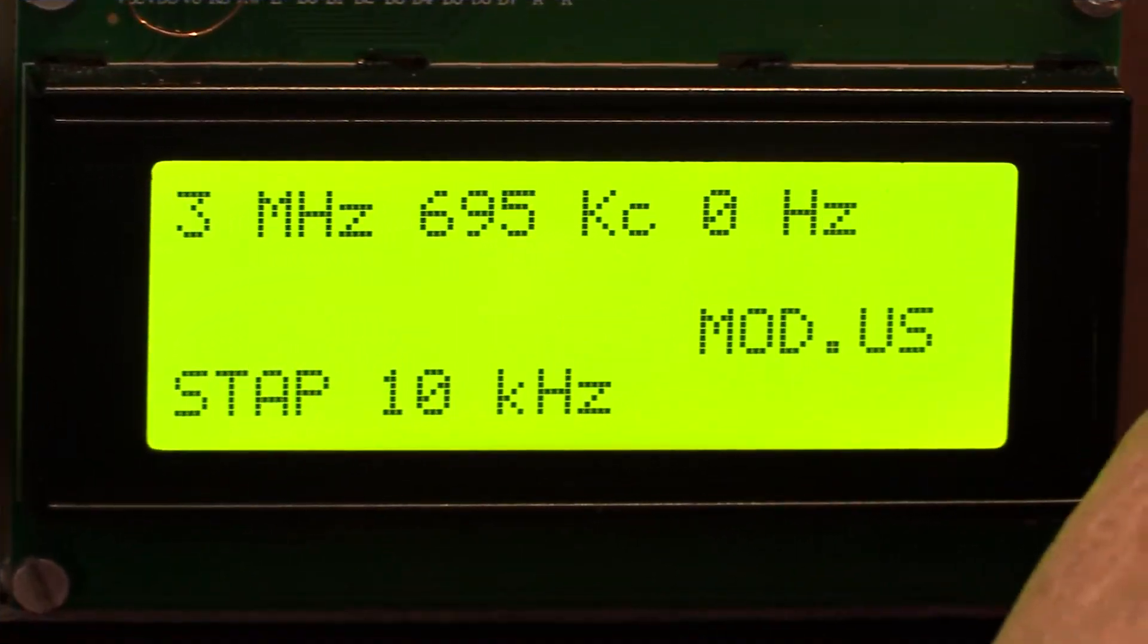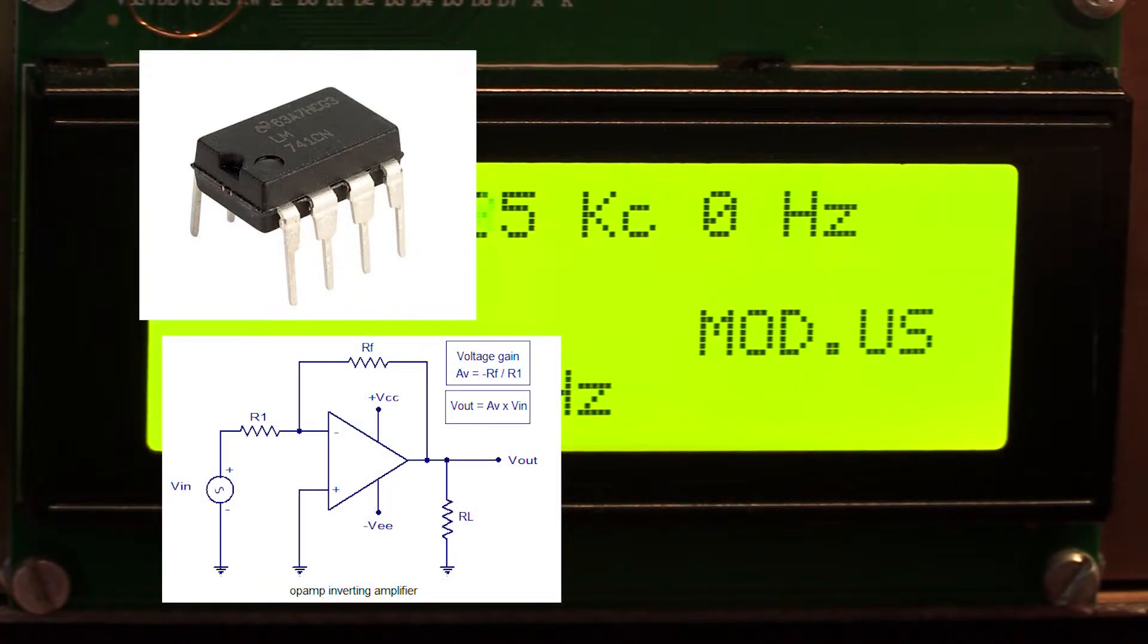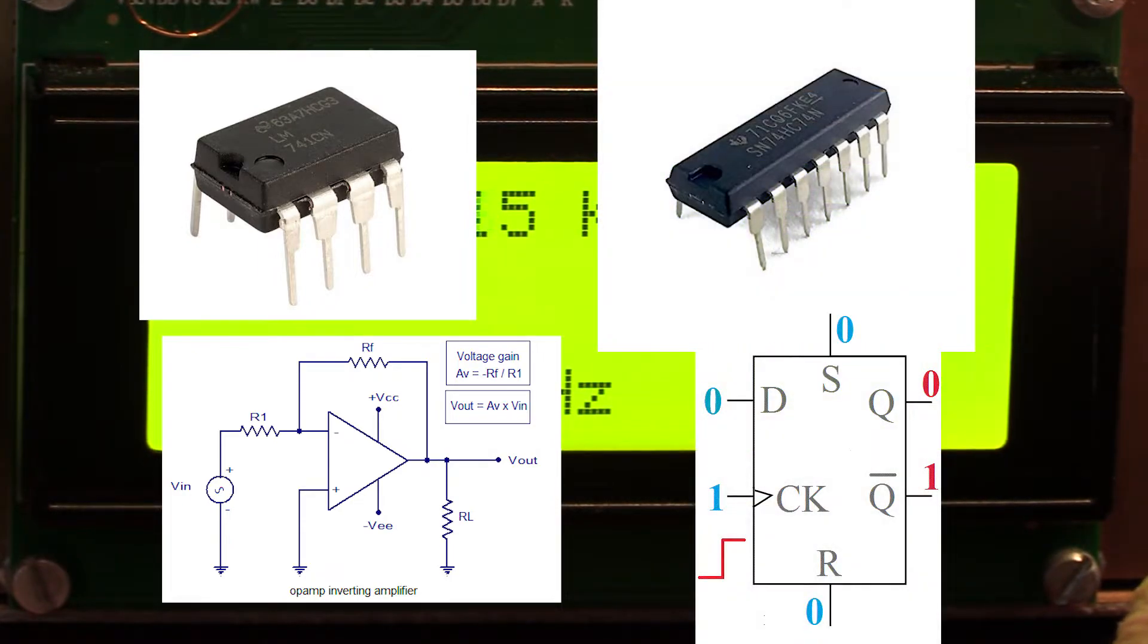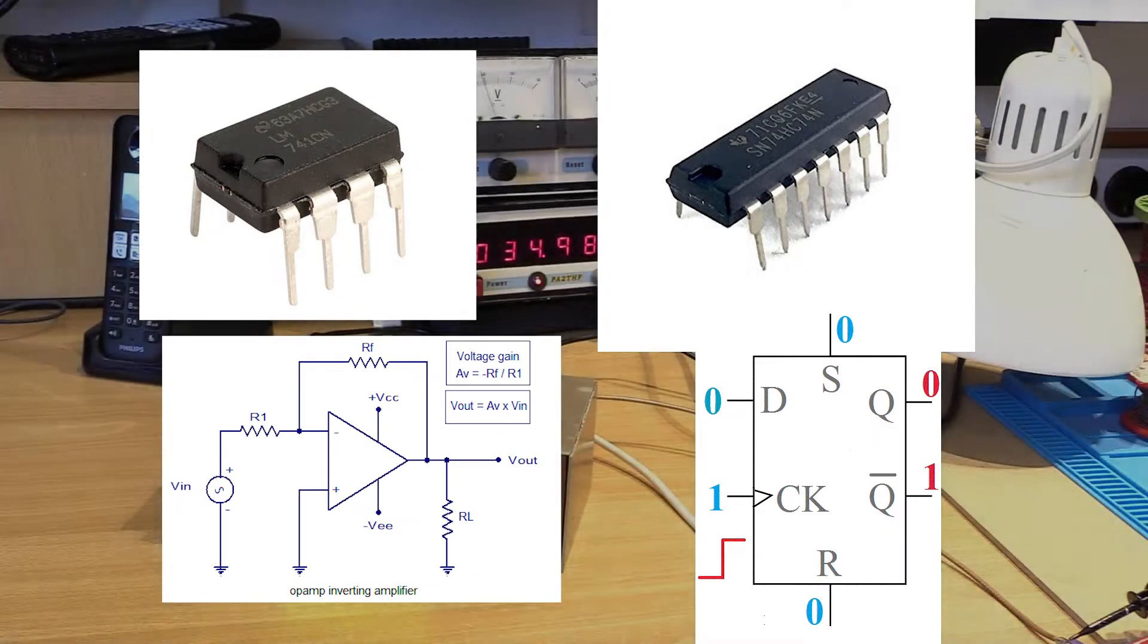In my old archive stock, I found a lot of 741 op-amps. Those were the days. Also a D flip-flop, the 7474, version HCT. So it could operate from 3 to well over 12 volts.